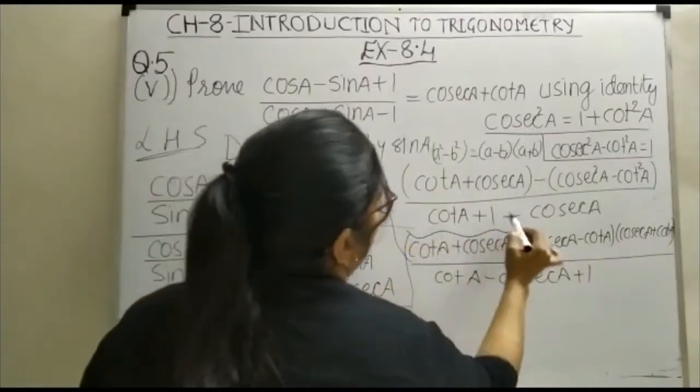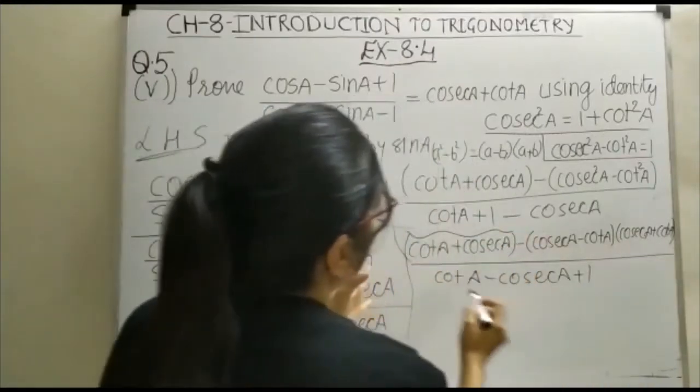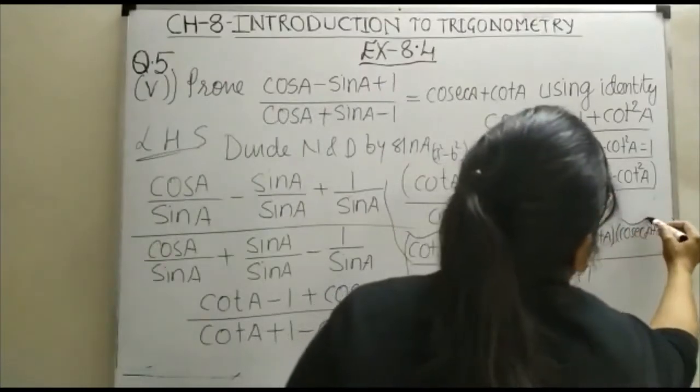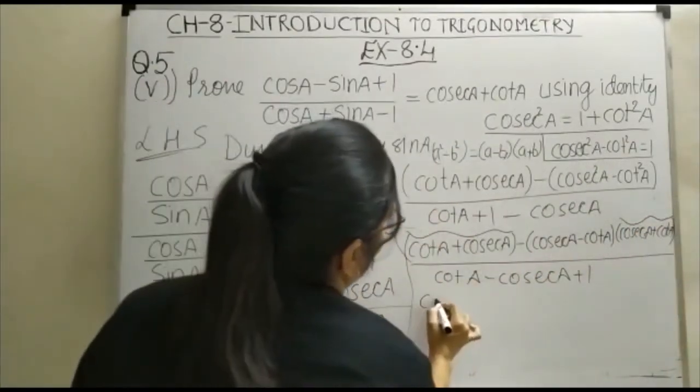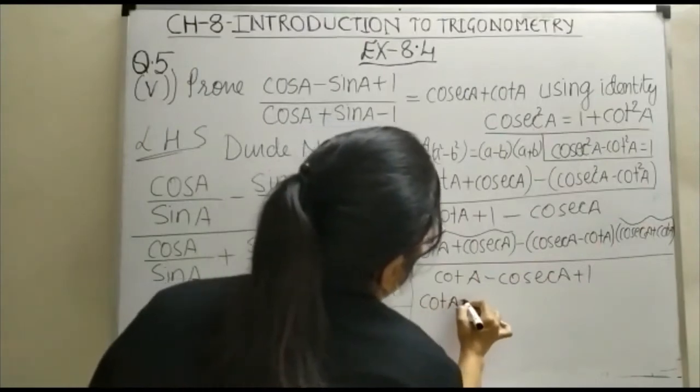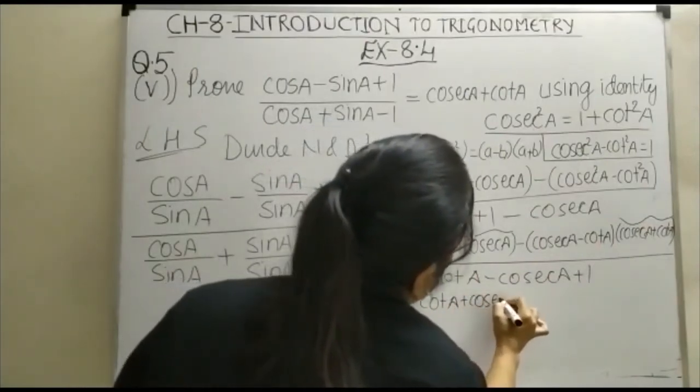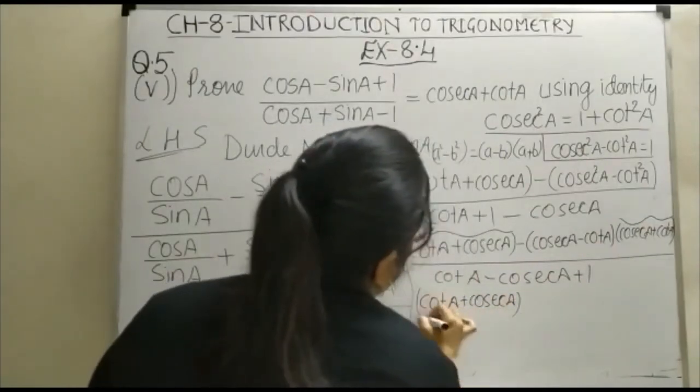Now, we will take this term common. We will take cotA plus cosec square A as common from both terms. So, this becomes cotA plus cosec square A.